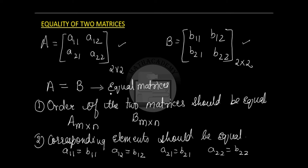So I hope the conditions necessary for two matrices to be equal is clear to everyone. The first one is that the order of the two matrices should be equal. If the order is equal, then please go ahead and check the corresponding elements of the two matrices. If they are equal, then the two matrices are considered to be equal. So let us learn this more through an example.